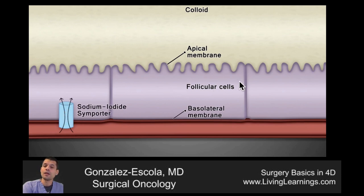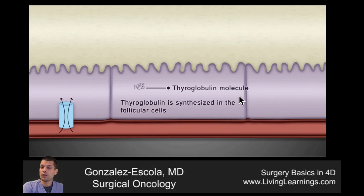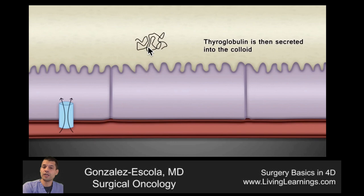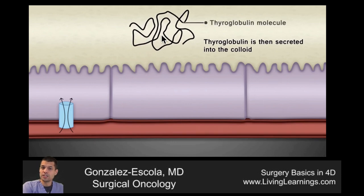In the follicular cells, the thyroglobulin molecule is synthesized. This is a large peptide chain that is secreted into the colloid. This large chain contains several tyrosine residues.